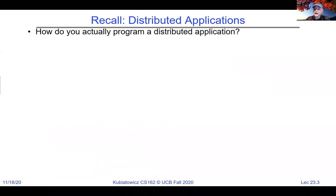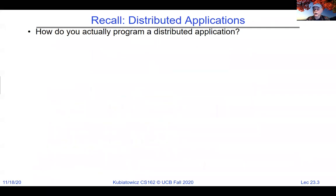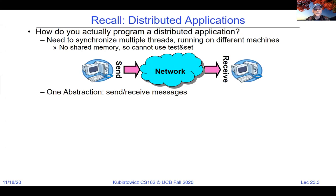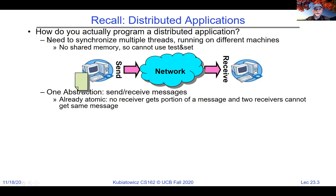A protocol basically has a syntax — how communications are specified and structured — as well as semantics, what each communication means. Typically there's stable storage on either side so that if either side crashes you can pick up where you left off. Today we're going to talk about one use of that stable storage for decision making. A distributed application is one where the individual pieces are spread all over the network, and you need to synchronize multiple threads on different machines without shared memory — so test-and-set and similar primitives aren't available to you.